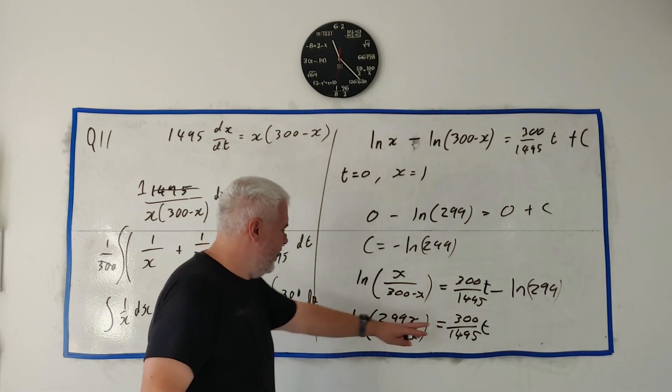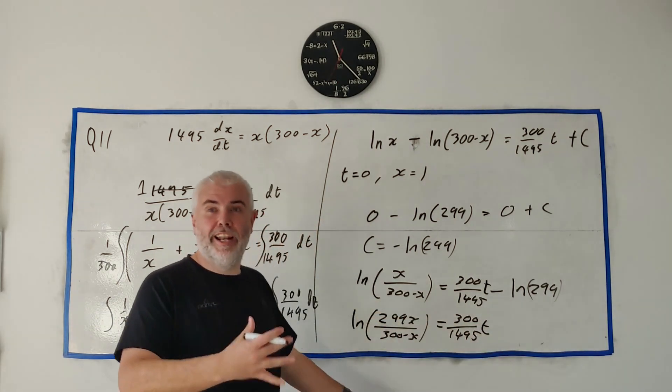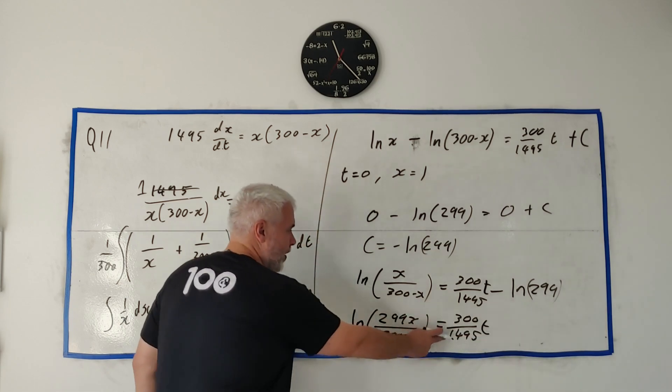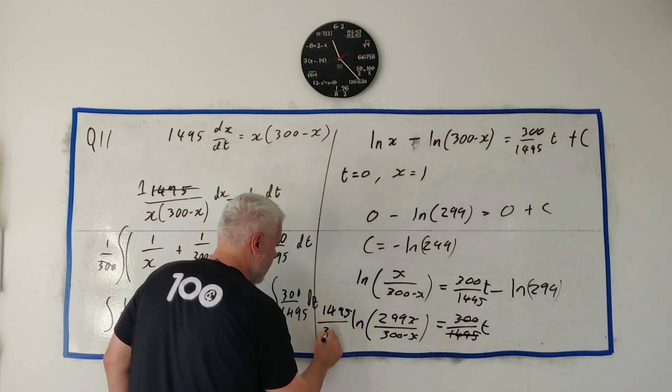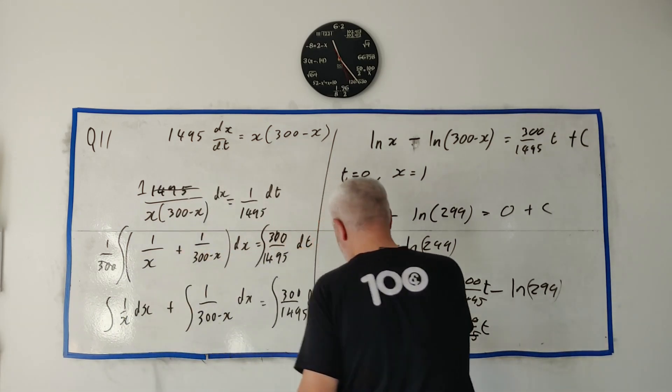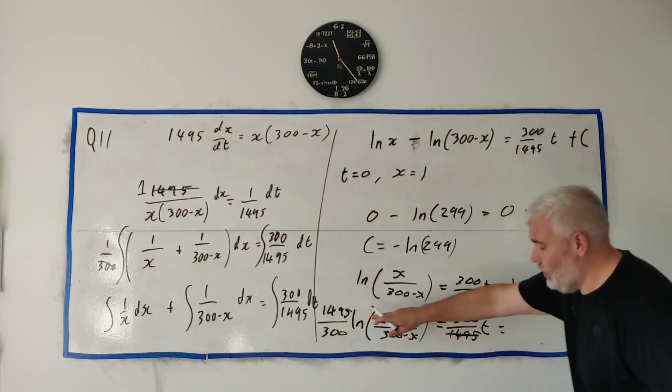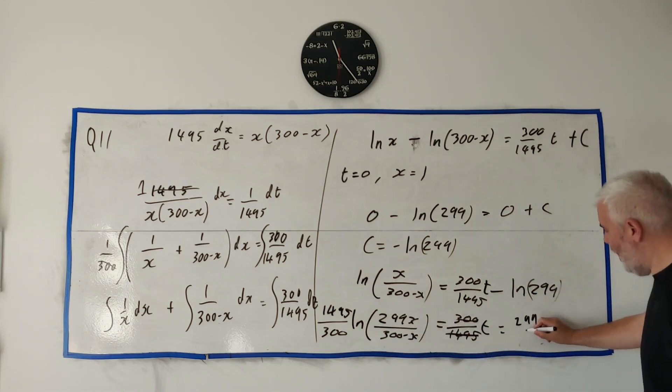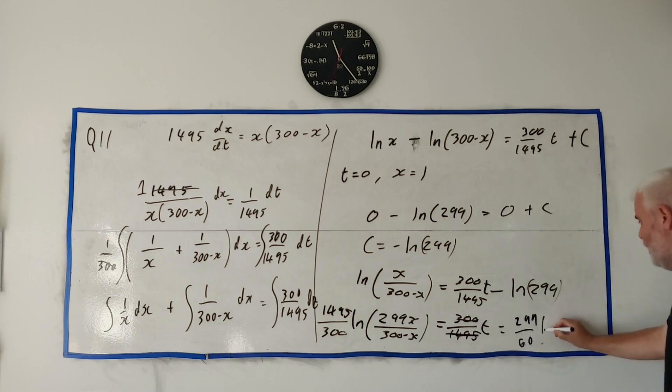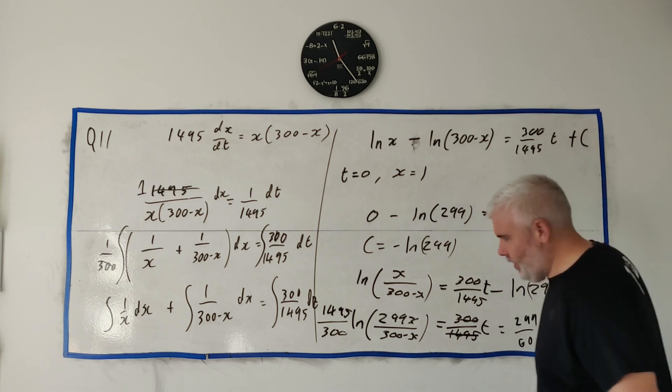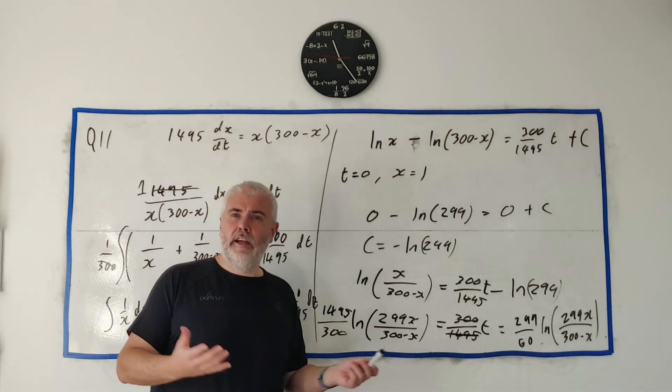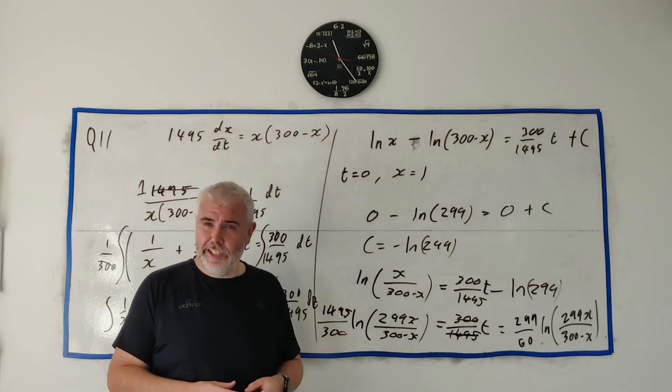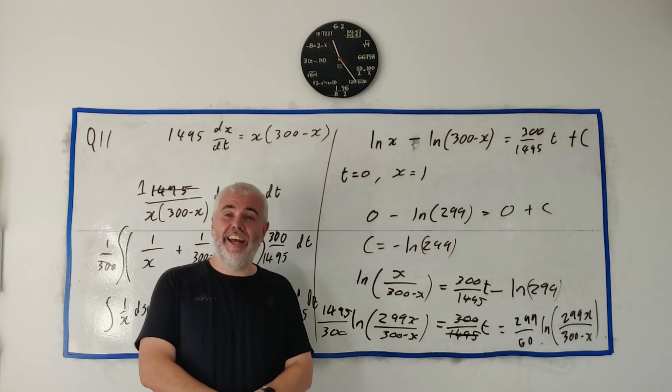I'm sorry, they want t on its own. They want the final answer to be an expression of t. So let's multiply both sides by 1495. Let's divide both sides by 300. Then you put this in a calculator, you'll find it actually goes down to 299 over 60. And then I'll just write this again. Natural log 299x over 300 minus x. That'd be the final answer I'd give. If you have any follow-up questions about anything I did there, let me know in the comments or point out any mistakes I made. It's always helpful to me. Thank you for watching and have a good day.